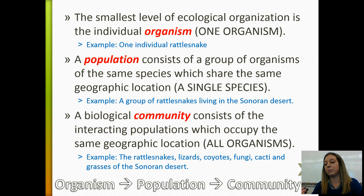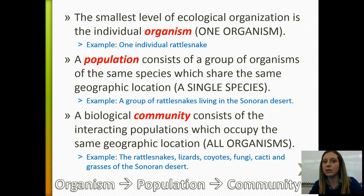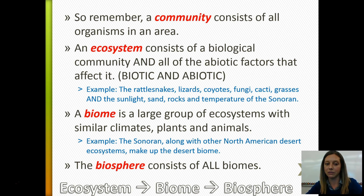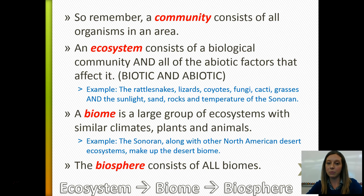Our community would be rattlesnakes, lizards, coyotes, fungi, cacti, grasses, and bacteria of the Sonoran Desert — all of the living or biotic factors in an area. An ecosystem is all of those living things in the community plus all of the abiotic factors, so biotic and abiotic, living and non-living. Our example ecosystem would be the rattlesnakes, lizards, coyotes, fungi, cacti, grasses, bacteria, plus the sunlight, sand, rocks, and temperature of the Sonoran Desert.